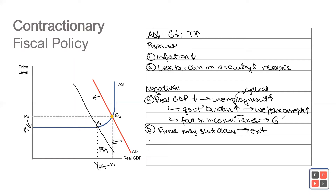As the government's income tax revenues decrease, the government may not have enough budget in the future to increase its spending, so government spending may also decrease — which is problematic because the government cannot have enough resources. Contractionary fiscal policy reduces aggregate demand by decreasing government spending and increasing taxation. Positives: it may reduce inflation and put less burden on the country's resources. Negatives: real GDP will fall, there could be an increase in cyclical unemployment, government burden increases due to higher welfare benefit payments, there could be a fall in tax revenues, and firms may shut down or exit the economy.